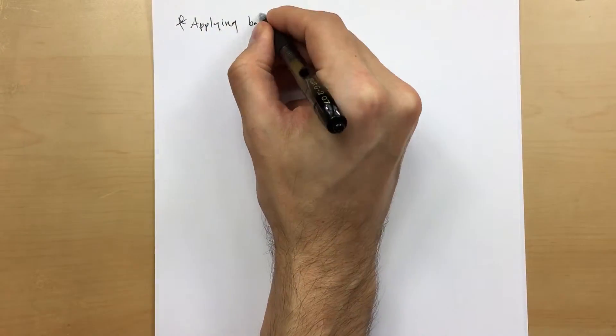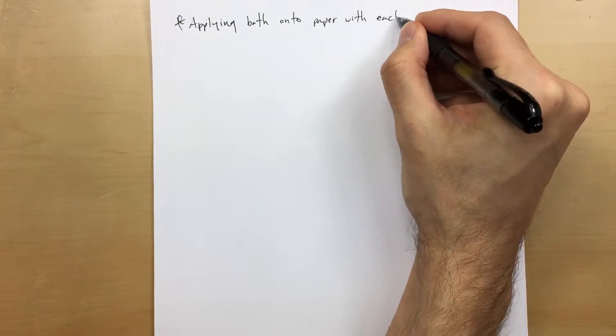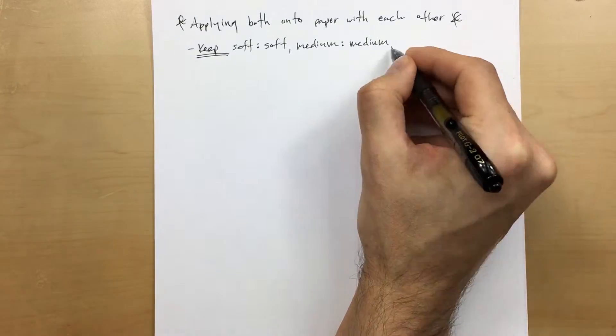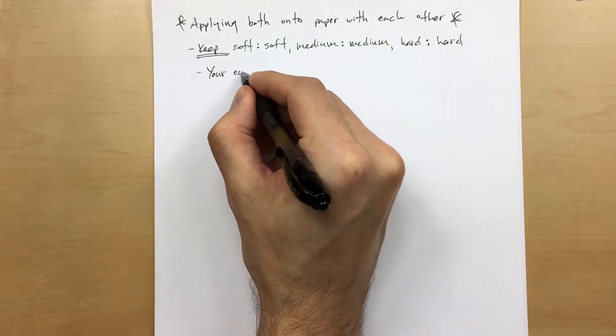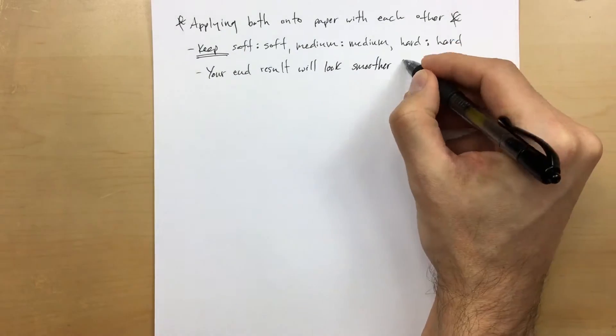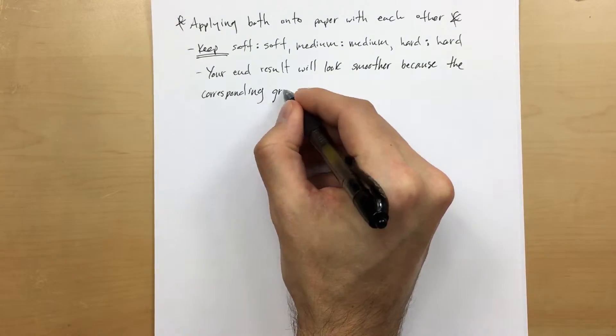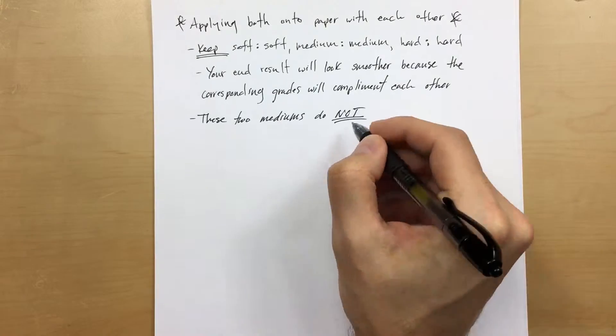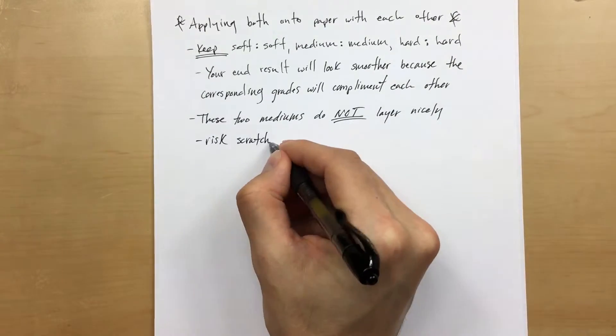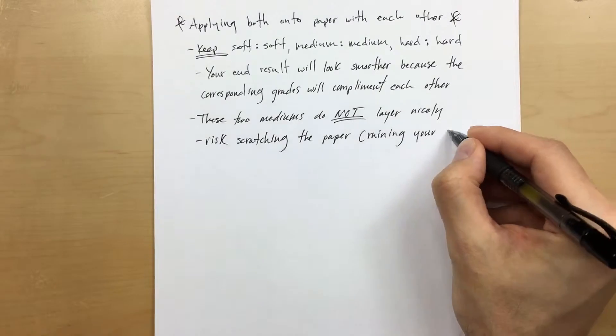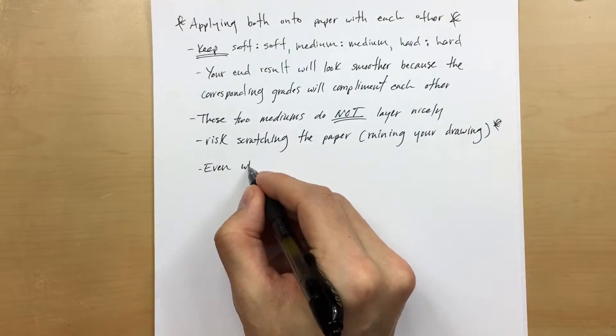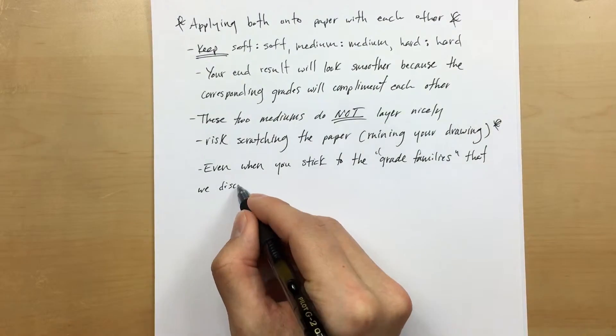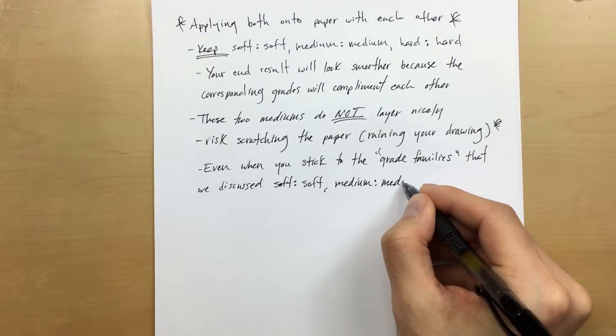Okay, now when applying both onto the paper with each other, this is where it gets a little tricky. So the first thing you're going to keep in mind is that you keep soft with soft, medium with medium, and hard with hard, meaning that you stick to those families that we just talked about. The reason why is because the end result will look smoother because the corresponding grades complement each other versus fight each other. The big thing is that these two mediums do not layer nicely. You risk scratching the paper and ruining your drawing even when you stick to the grade families that we just talked about.